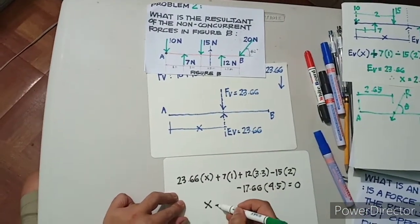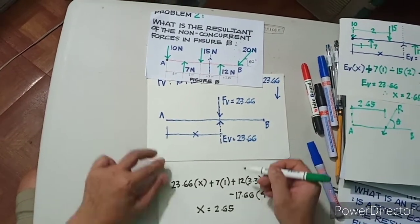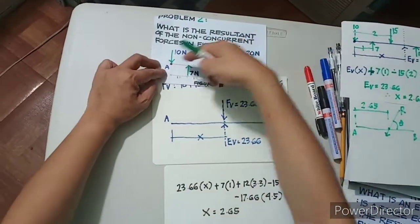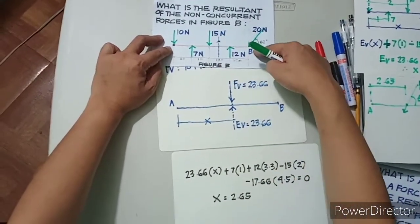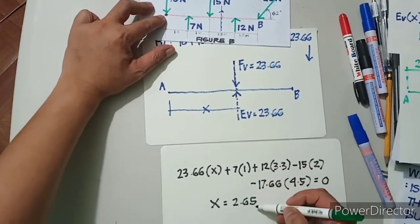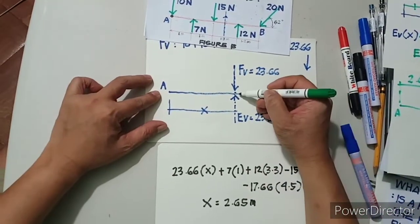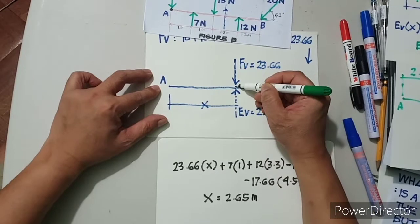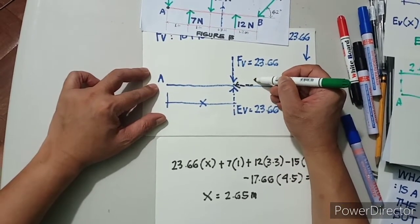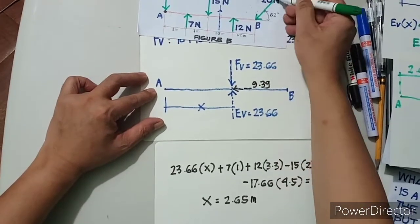From this, you will be able to find the value of X equivalent to 2.65 meters — that is supposedly the location of the forces, located between point A and point B, at a distance of 2.65 meters from point A. You also have a horizontal component which is equivalent to 9.39 — that's the horizontal component of 20.